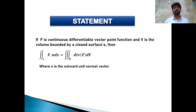F is a continuous differentiable vector point function — we will discuss vector point functions in the first interaction class, along with scalar point functions. V is the volume bounded by the closed surface S. Then the surface integral over S of F dot N into dS equals the volume integral over V of the divergence of F into dV.